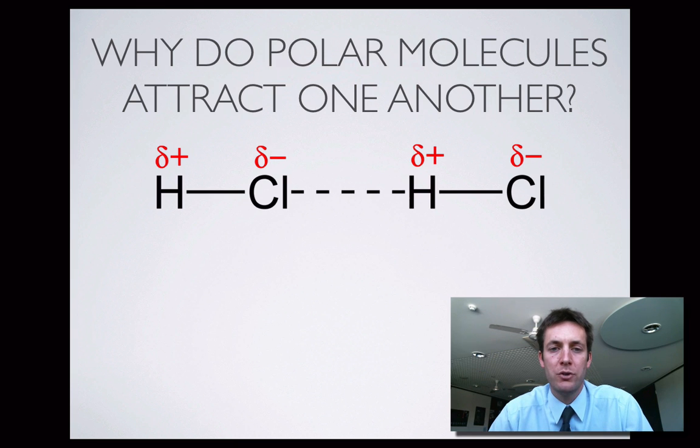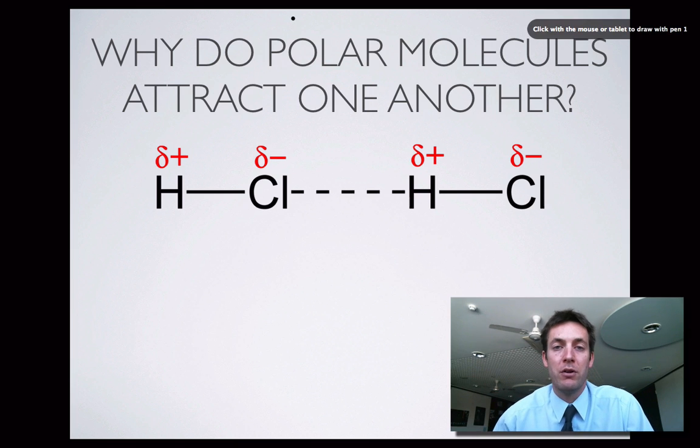So why do polar molecules attract one another? Well, if you remember what we were talking about in the polar bonds and polar molecules film, this diagram shows us that we've got two HCl molecules. They're polar molecules because the chlorine is more electronegative than the hydrogen. So the electrons, instead of being here in the middle of the bond, they're over towards the chlorine. And so this end of the bond is more negative. And that's the only bond in an HCl molecule. So this end of the molecule is more negative.